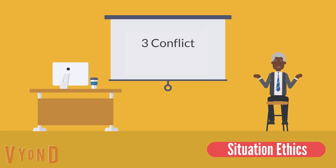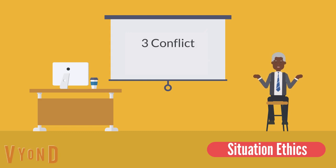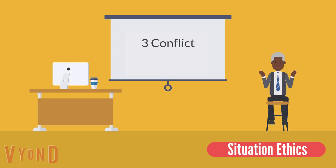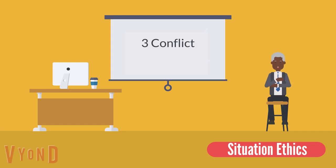Situation ethics is an ethical theory based on the teaching of Jesus. It says decisions should be based on what is the most loving thing to do, so every situation should be judged individually. For example, going to war to remove an evil dictator. Some Christians disagree, because what is the most loving thing is subjective. It's impossible to know how the situation will turn out and whether it actually is the most loving thing. Also, how can murder ever be the most loving thing to do?